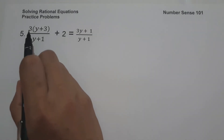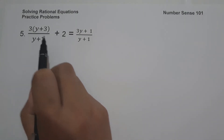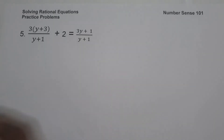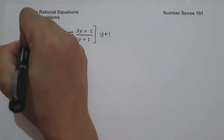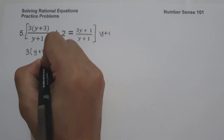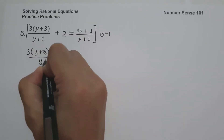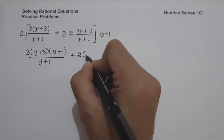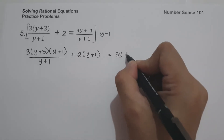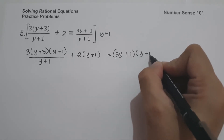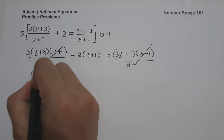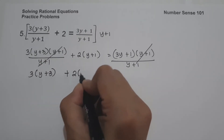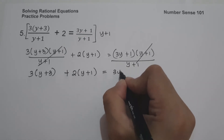On example number 5, we have 3 times y plus 3 all over y plus 1, plus 2, equals 3y plus 1 all over y plus 1. Just like in example number 4, we have the same denominator. To eliminate the denominators, let us multiply the whole equation by y plus 1. This gives us 3 times y plus 3 times y plus 1, over y plus 1, plus 2 times y plus 1, equals 3y plus 1 times y plus 1, over y plus 1. Canceling gives 3 times y plus 3 plus 2 times y plus 1 equals 3y plus 1.